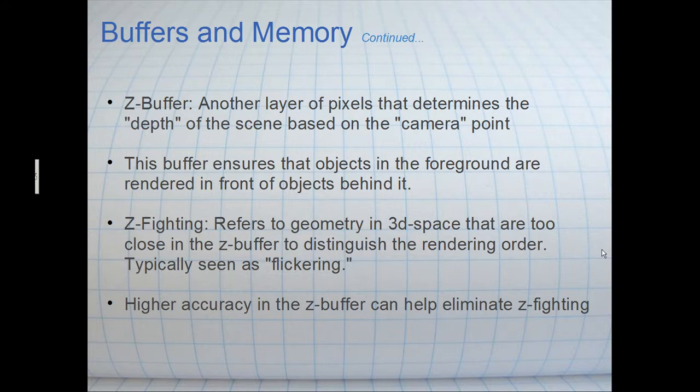A zbuffer is sort of another behind the scenes layer of pixels that determines the depth of the scene based on the camera point. So what I mean by that is it's sort of what handles how you draw objects in front of other objects in the right order.